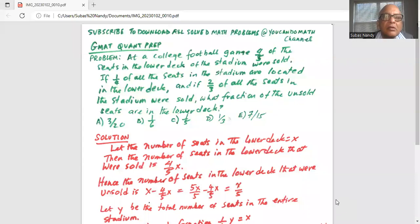So let's get started. The problem statement states: at a college football, four-fifths of the seats in the lower deck of the stadium were sold.